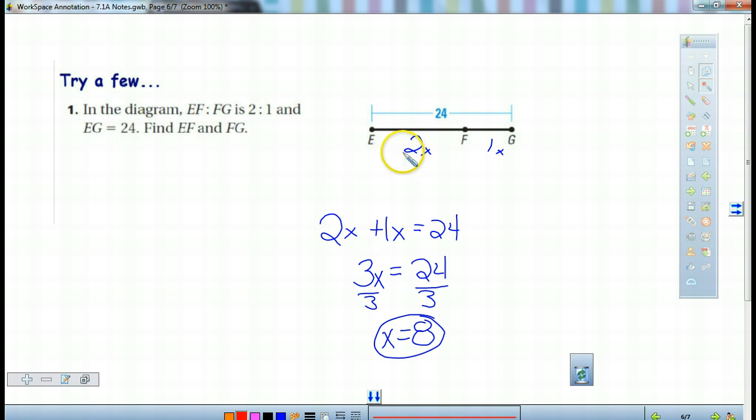So now I can take it and plug it in. 2 times 8 gives us 16. So EF is 16. FG is 1 times 8. So that's 8. We can check it by 16 plus 8 gives us 24.